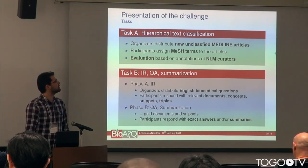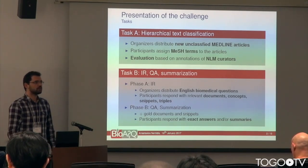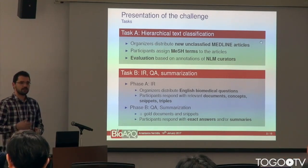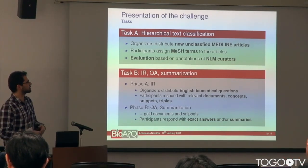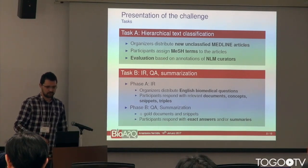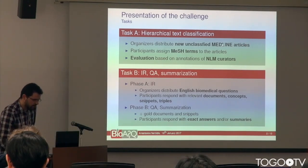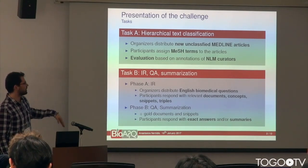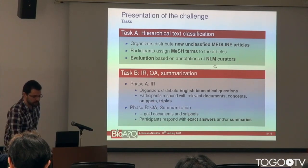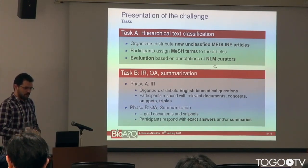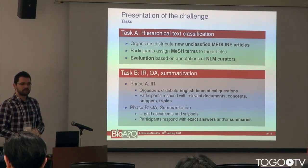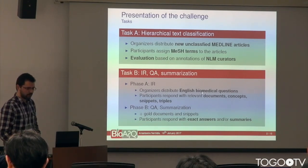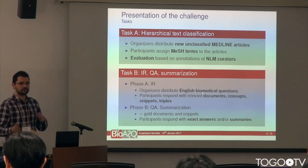The competition is structured into two tasks. Task A on semantic indexing — in effect, hierarchical text classification in MeSH classes and terms. And in Task B, which is further divided into Phase A of information retrieval, where English biomedical questions in natural language are distributed, and participants have to respond with relevant documents, concepts, snippets, and triples.